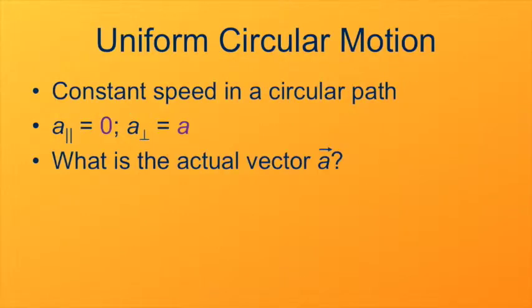So here's some of the characteristics of uniform circular motion. As I defined before, it's a constant speed in a circular path. As it turns out, the component of acceleration in the direction of velocity, that's what we're referring to here as A parallel, is zero, because the speed's not changing. The component of acceleration perpendicular to the velocity is all of it. To change the direction but not the speed, you have to apply a force that's perpendicular to the velocity.